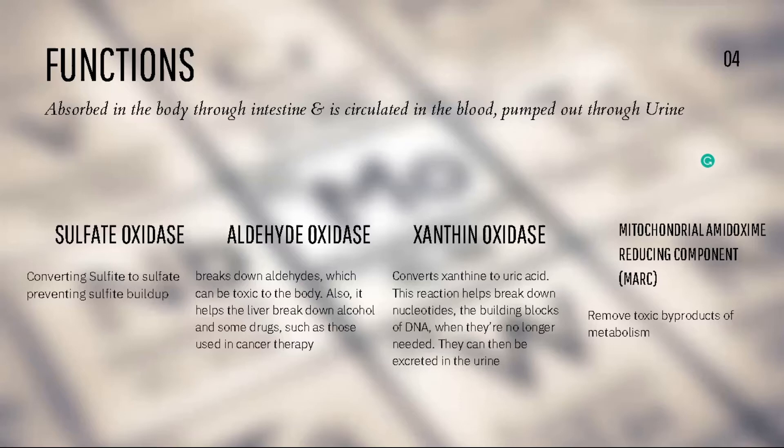Similarly, xanthine is converted into uric acid — this breaks down nucleotides and helps in further processing of uric acid into urine. Basically, at the last mile of removing waste from your system, you need molybdenum to safely convert them so they can be transferred to other parts of the body.